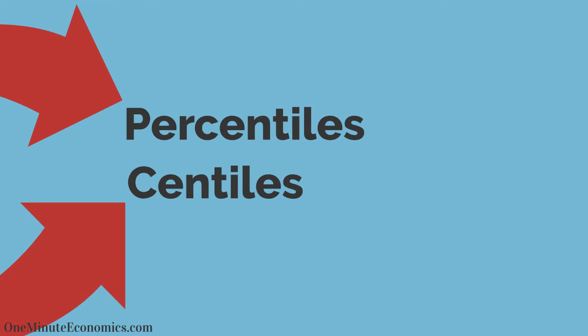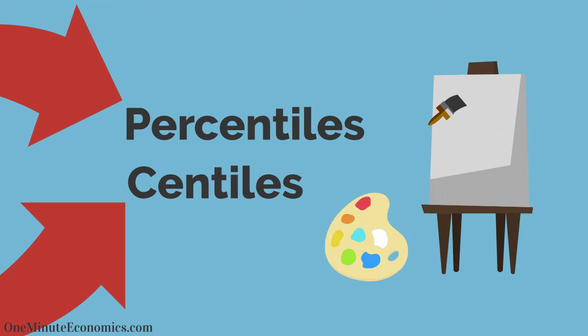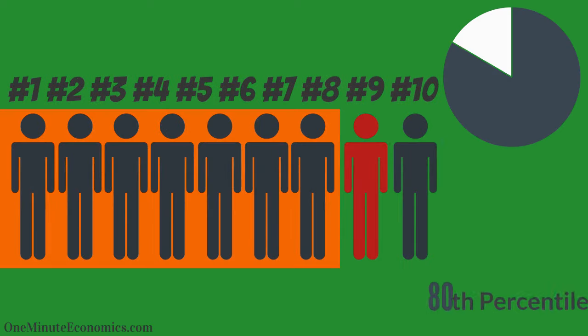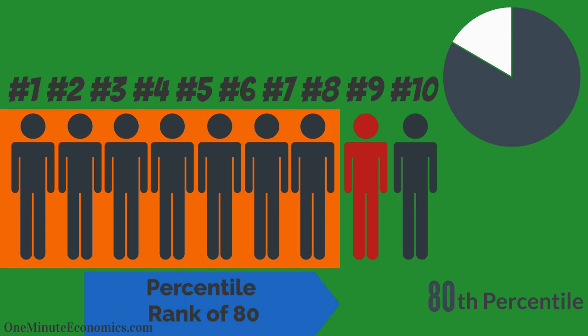Percentiles, also called centiles, are here to help paint a more specific picture. If only one person got a higher score and 8 people did worse than you, we say you're at the 80th percentile or that the percentile rank is 80 because 80% of the test scores are below yours.